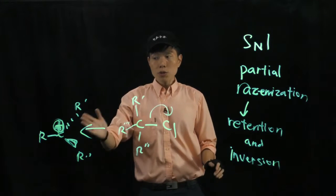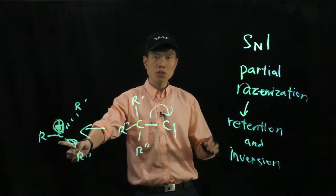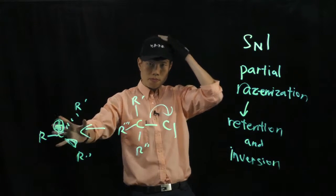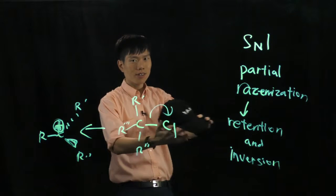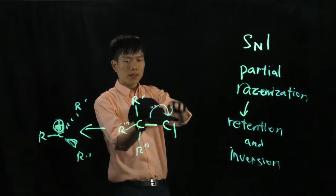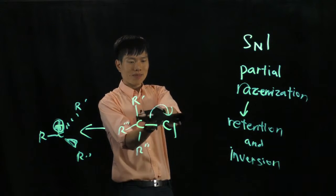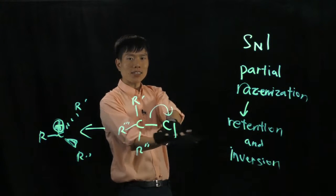Now we know that a carbocation here, this carbon is sp2 hybridized. So imagine the cap. When I take out, I'm the leaving group, I'm gone now. Focus on the cap. It's flat. It becomes trigonal planar. It's flat.